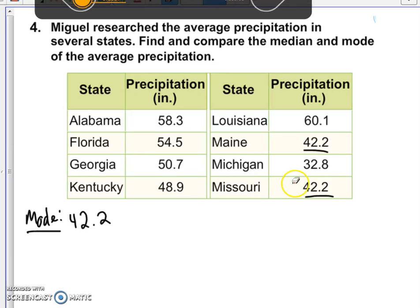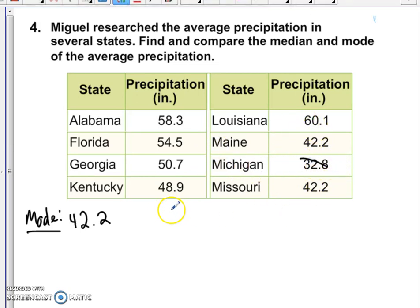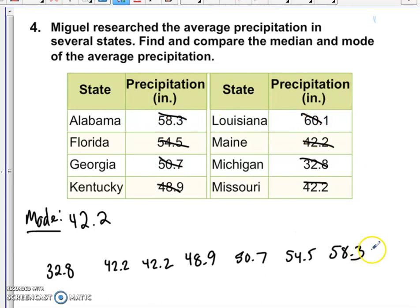Now for the median, we have to organize them from least to greatest. So our smallest value is 32.8. Then we have the 40s, 42.2. We have two of those. Then we have 48.9, 50 and 7 tenths, 54 and 5 tenths, 58 and 3 tenths, and finally 60 and 1 tenths.